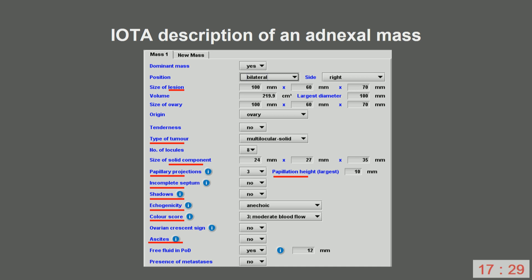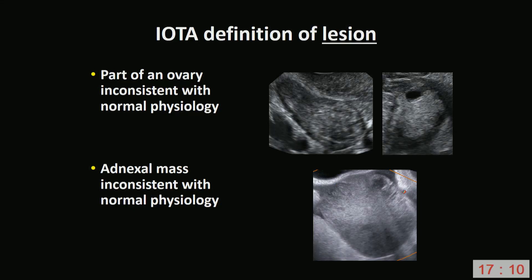These are the variables we use to describe an adnexal mass using the IOTA terminology. I will go through the definitions of the most important variables, and I will describe how to take measurements of the lesion, the size of the solid component or papillary projection, and the amount of free fluid in the pouch of Douglas.